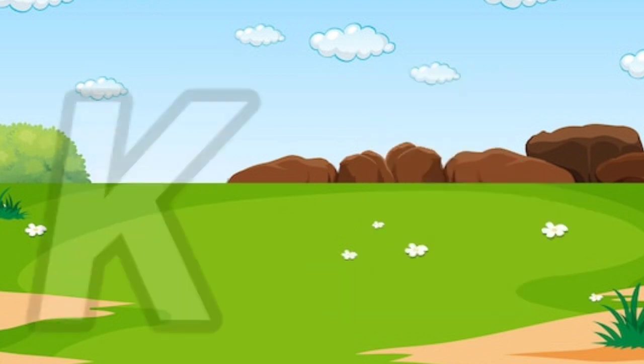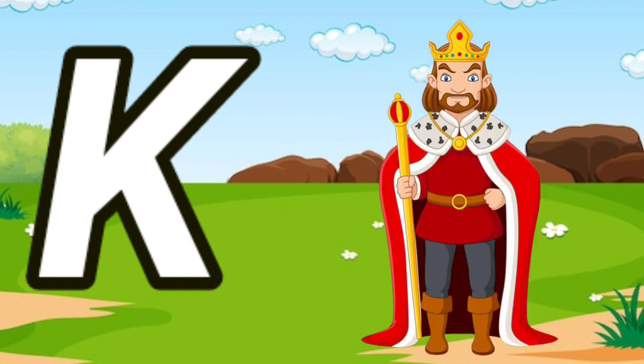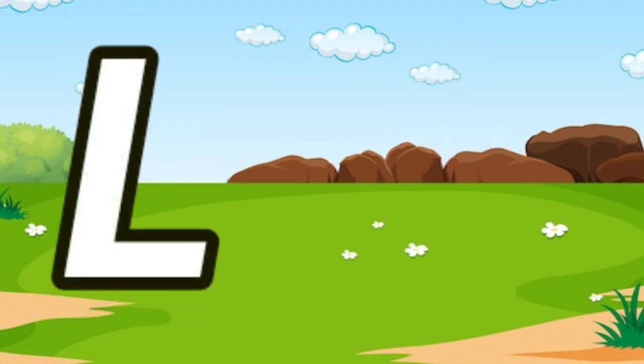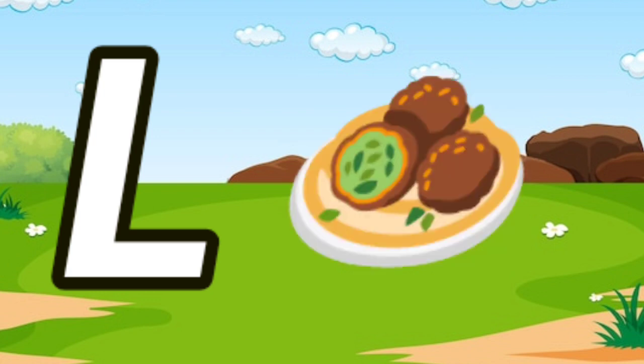K is for Key. K, K. Key. K is for King. K, K. King. L is for Leaf. L, L. Leaf. L is for Lunch. L, L. Lunch.